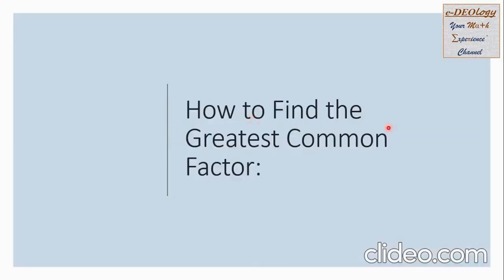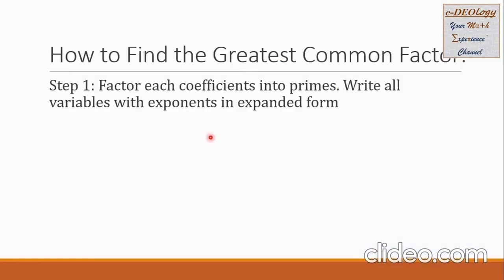How to find the greatest common factor? We're going to follow some steps. Step 1: factor each coefficient into primes, and write all variables with exponents in expanded form.